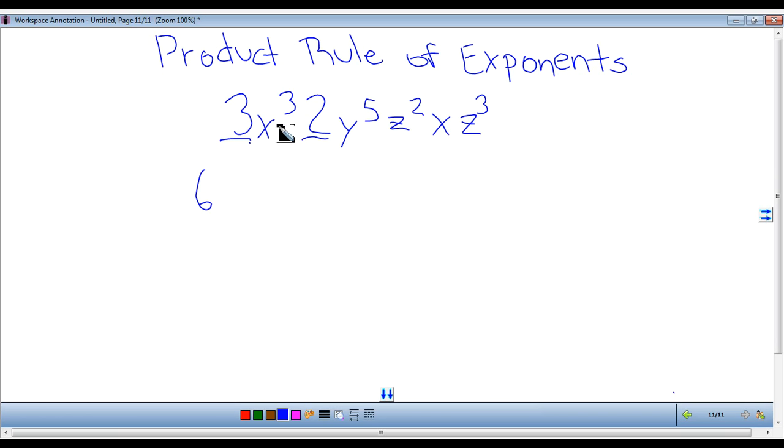Next we look at the variables. Here we have an x. Put it down here next to the 6. We look for other x's. Here we have another x. It's alone so that means it has a 1. So now you just add the 3 and the 1 and that will get you 4. So you put x to the 4.